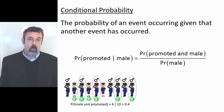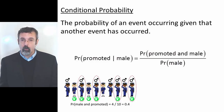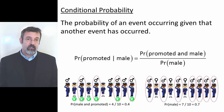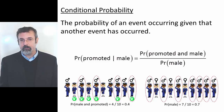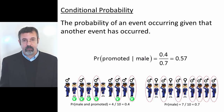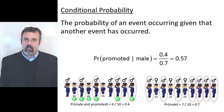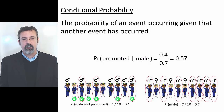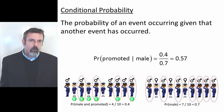Of our ten officers, four are both promoted and male, so the probability of being promoted and male is 40%. Of the ten officers, seven are male, so the probability of being male is 70%. 0.4 divided by 0.7 is 0.57, or the probability of an officer being promoted given that the officer is male is 57%.